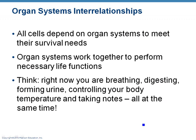All these systems have to work together — none of them work independently. They're all interrelated. It's really hard to survive missing an organ system. You can't make it without a nervous system. If you lose your heart, they have artificial hearts, but you still need that function. If you have kidney failure, you can go on dialysis as an artificial kidney. Right now you're using your respiratory system, digestive system, urinary system, controlling body temperature, using your brain — all at the same time.